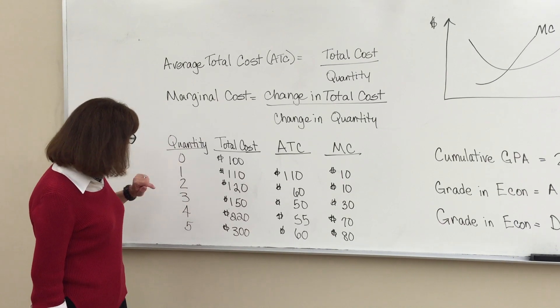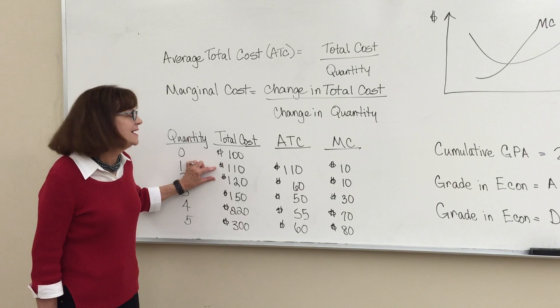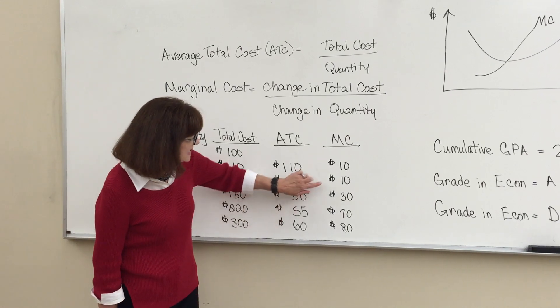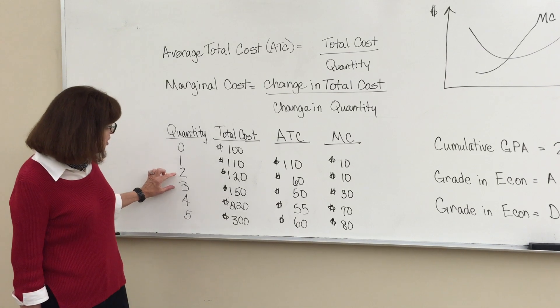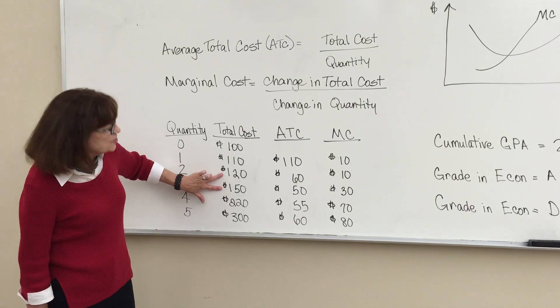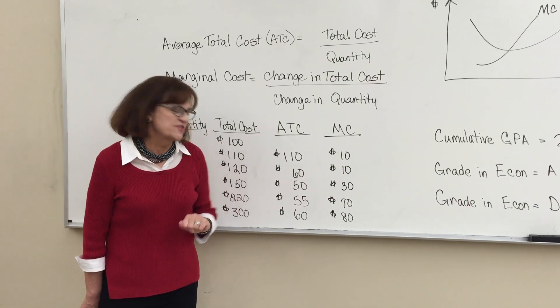When you went from one unit to two units, your total cost only went up by $10. So the marginal cost of the second unit was only $10. When you produced your third unit, your total cost went up by $30 though. So the marginal cost of a third unit is $30.